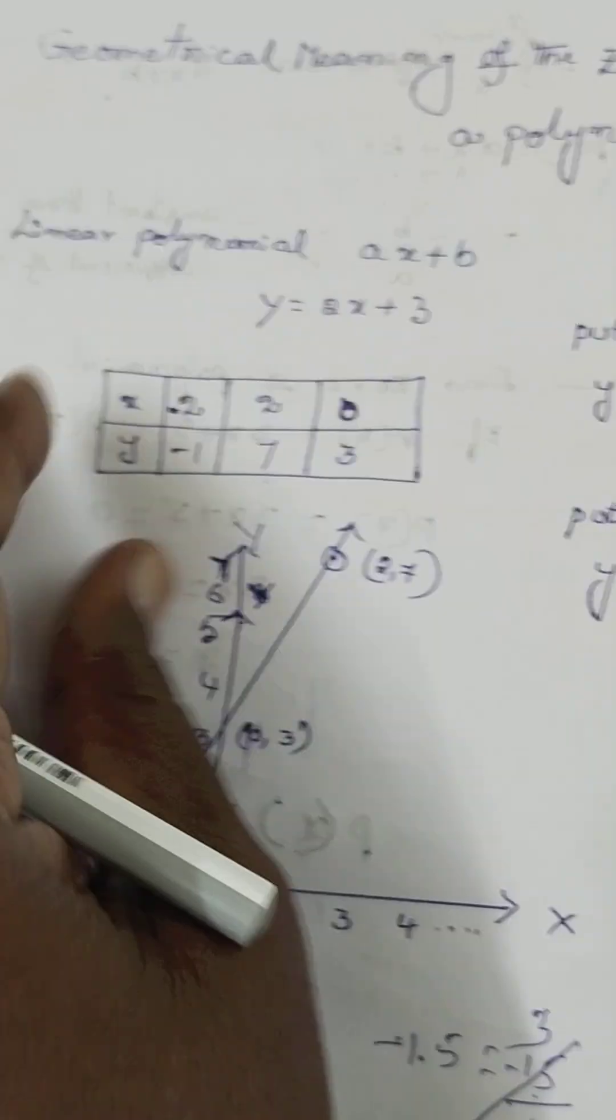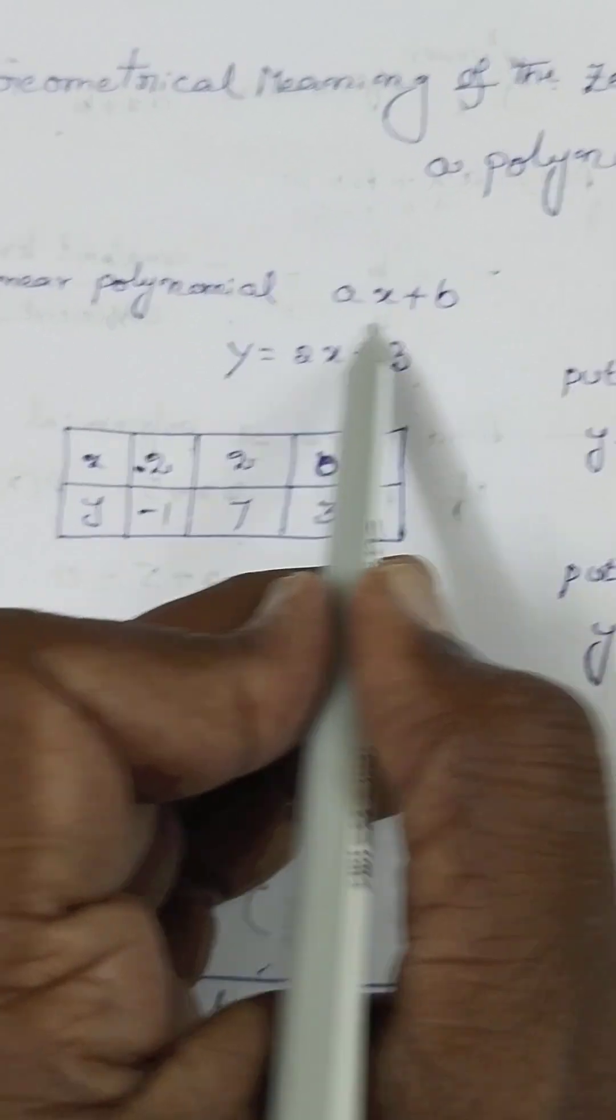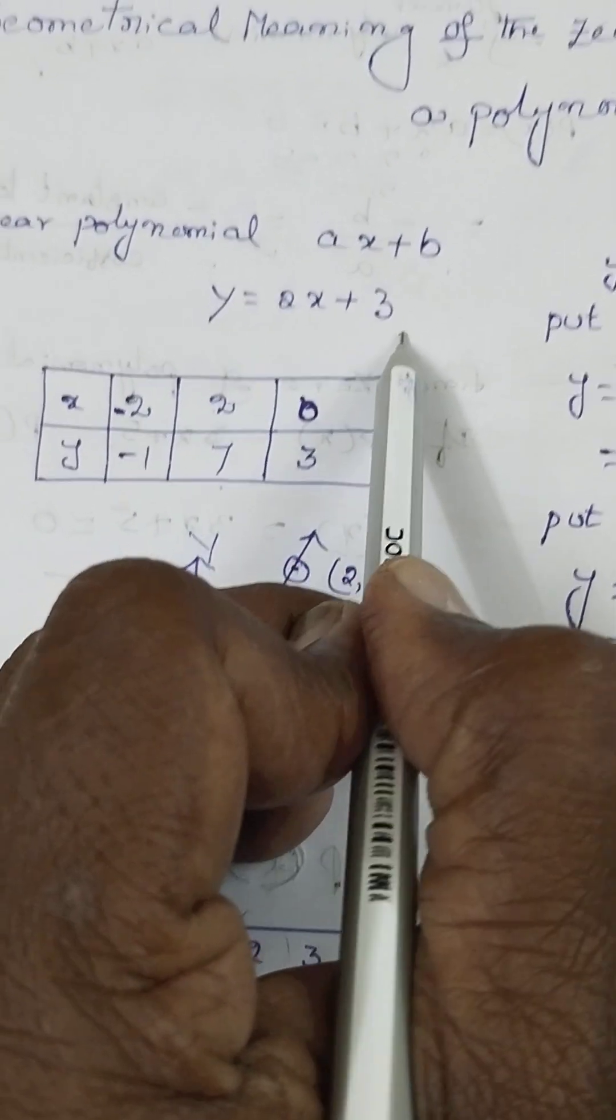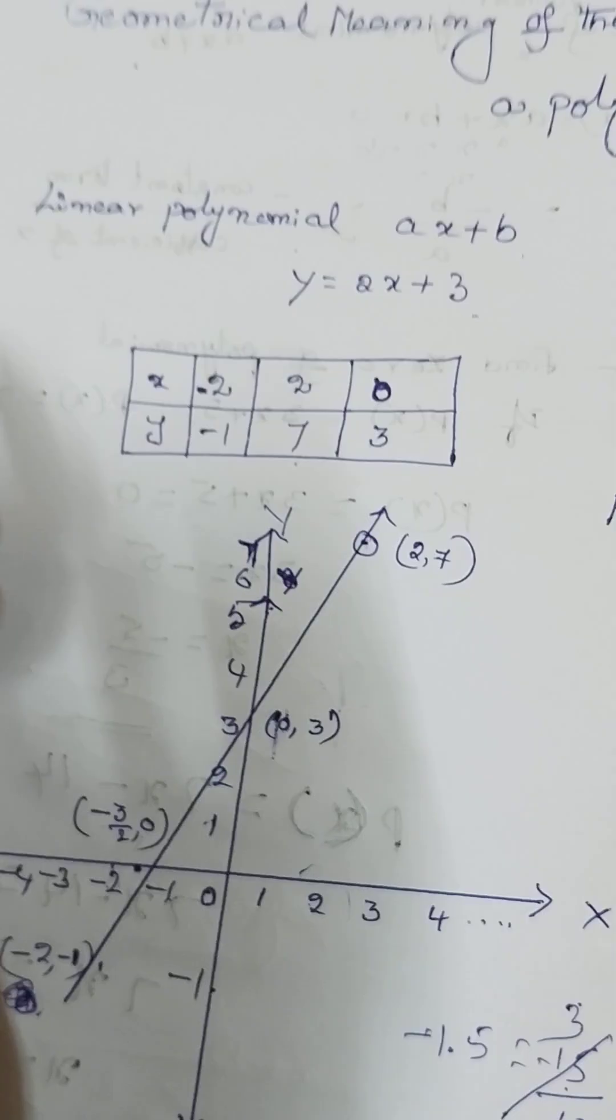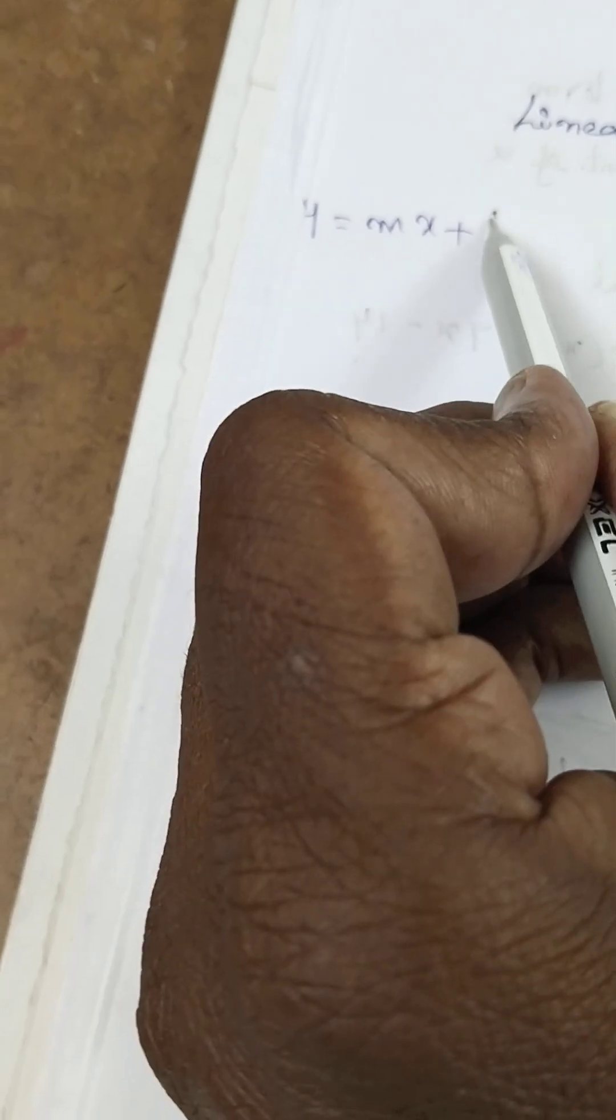Let's graph this linear polynomial y is equal to 2x plus 3. This is in the form y is equal to mx plus c.